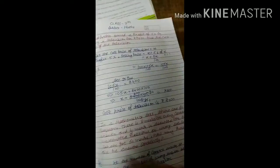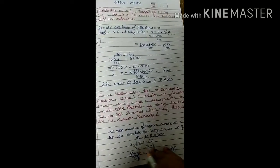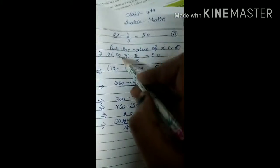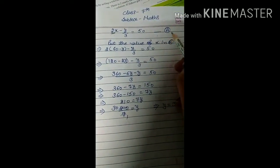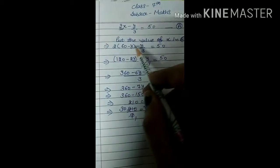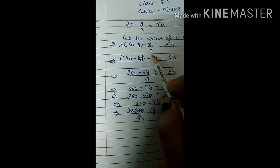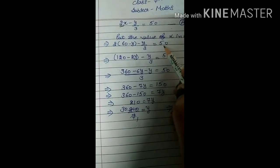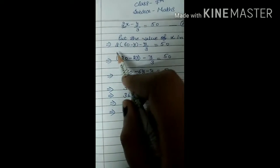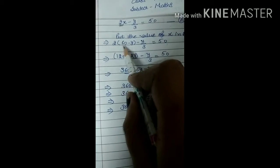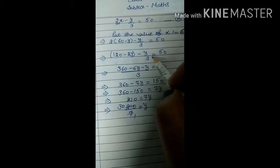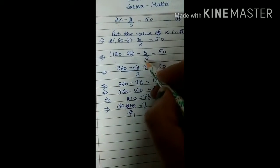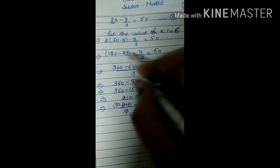Now we substitute x = 60 − y into the marks equation. So we get: 2(60 − y) − y/3 = 50. Expanding the bracket: 120 − 2y − y/3 = 50.